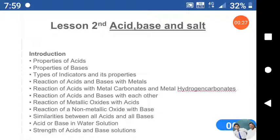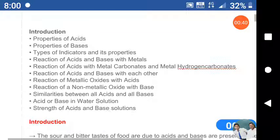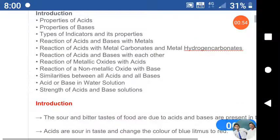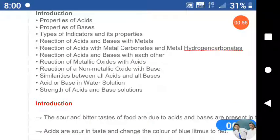Properties of Acid, Properties of Base, Type of Indicators and Its Properties, Reaction of Acid and Base with Metals, Reaction of Acid with Metal Carbonate and Metal Hydrogen Carbonate, Reaction of Acid and Base with Each Other, Reaction of Metallic Oxide with Acid, Reaction of Non-Metallic Oxide with Base, Similarities between All Acid and All Bases, Acid or Base in Water Solution, Strength of Acid and Base Solution.